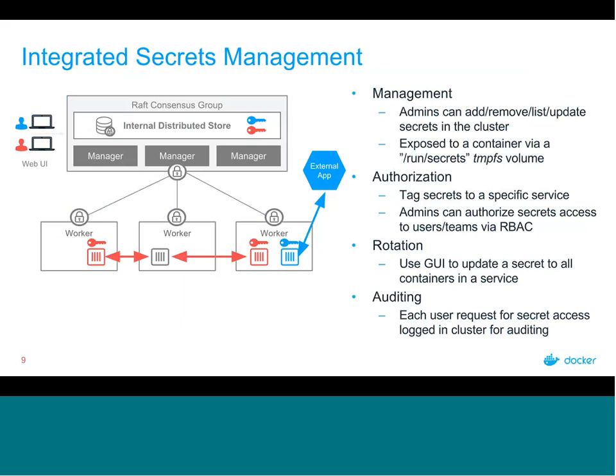In Docker 1.13 swarm mode, you can securely store secrets directly on the cluster. They're encrypted and stored within the Raft consensus group that holds together the swarm managers — sharded around and effectively impossible to grab by normal means. From a management standpoint in Docker Data Center, admins can add, remove, list, and update all secrets in the cluster directly from the GUI. Users or admins can inject a secret directly into a Docker service at runtime or later by editing and restarting the service.